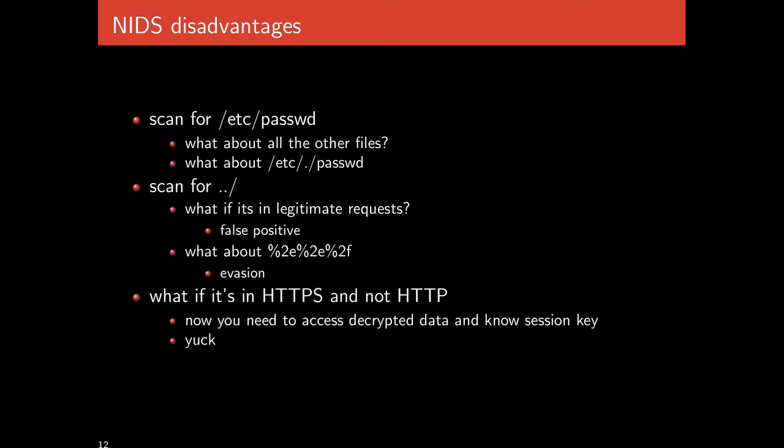This is an example of evasion or obfuscation. The network IDS would have to recognize all possible ways the ultimate server might interpret a string into dot-dot-slash, not just the literal string. Finally, what if the traffic is encrypted — HTTPS instead of HTTP? Now the network IDS needs to perform a man-in-the-middle attack; it needs access to decrypted traffic and the session key. It's no longer end-to-end secure, and this opens up a large number of further problems.